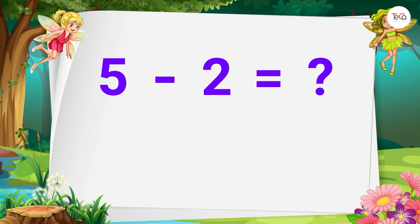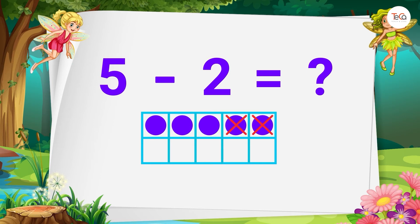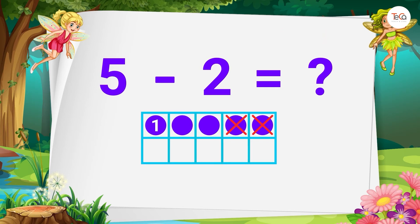If you have to subtract, for example, 5 minus 2, then you can use a 10 frame to subtract like this. Draw 5 dots, then cross out 2 dots, then count the dots left to find the difference. Here we have 1, 2, 3. So there are 3 dots left. Therefore, 5 minus 2 equals 3.